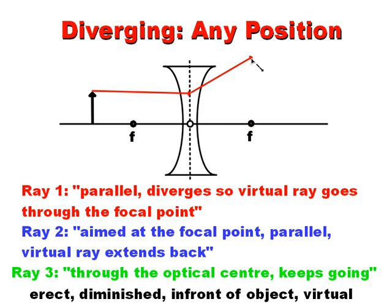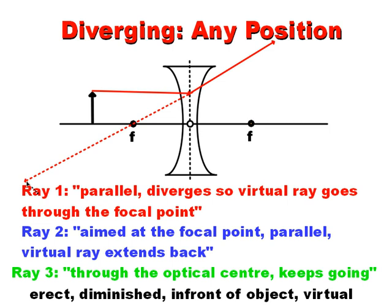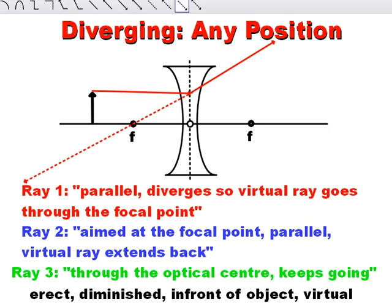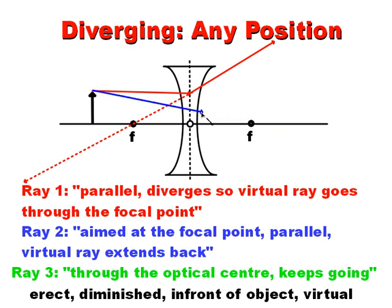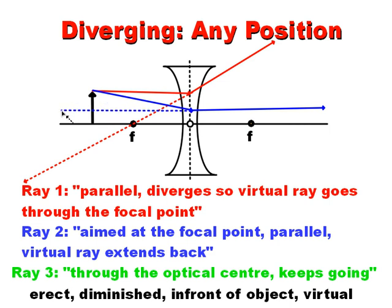So it goes parallel and then diverges, with the virtual ray extending back through the focal point. For the second ray, I aim it as if it were going through the focal point on the far side — a solid line heading toward that focal point — but it hits the lens and instead goes parallel. I then extend that parallel refracted ray back as a virtual ray. You can already see where we're going to get our image.